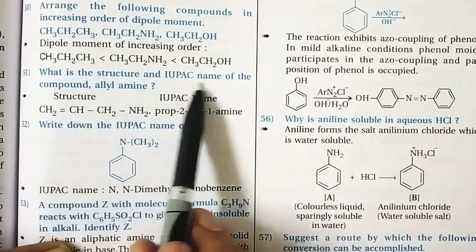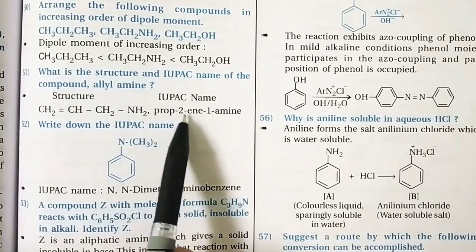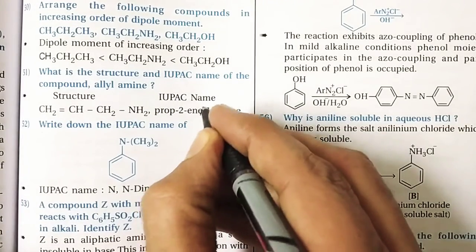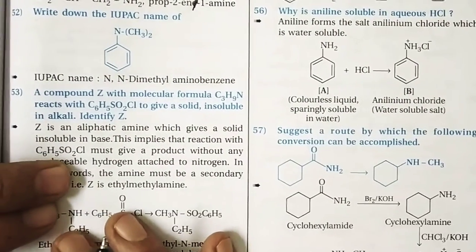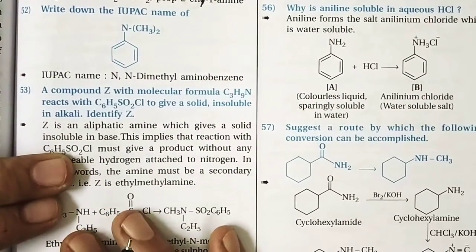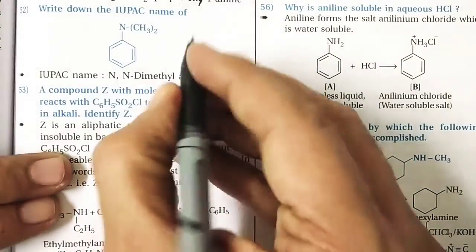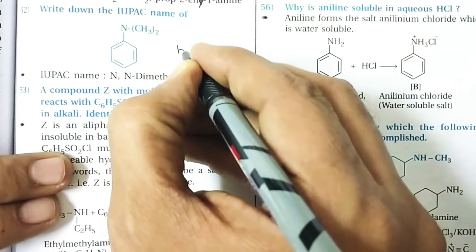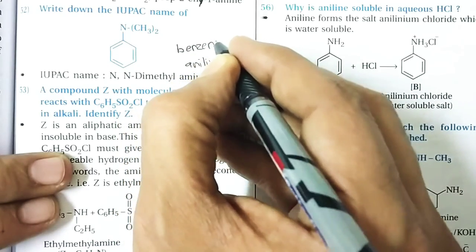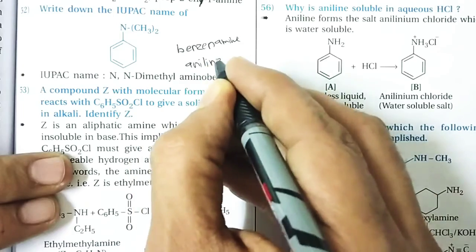Question 51: What is the structure and IUPAC name of the compound? It is prop-2-yn-1-amine. Question 52: Write the IUPAC name of the given compound. It can be named N,N-dimethylbenzenamine, or N,N-dimethylaminobenzene, or aniline — any of these names is acceptable.